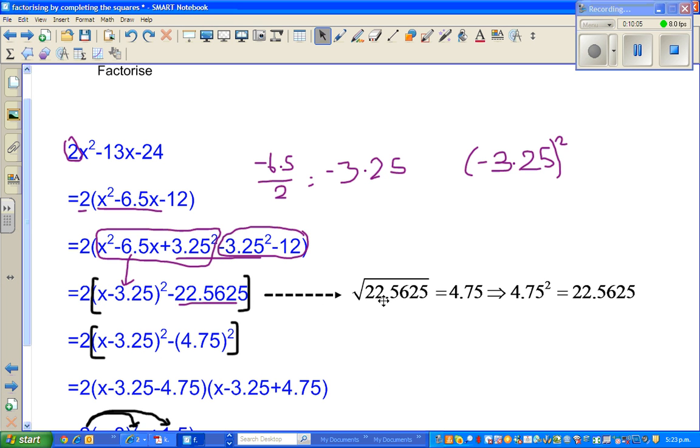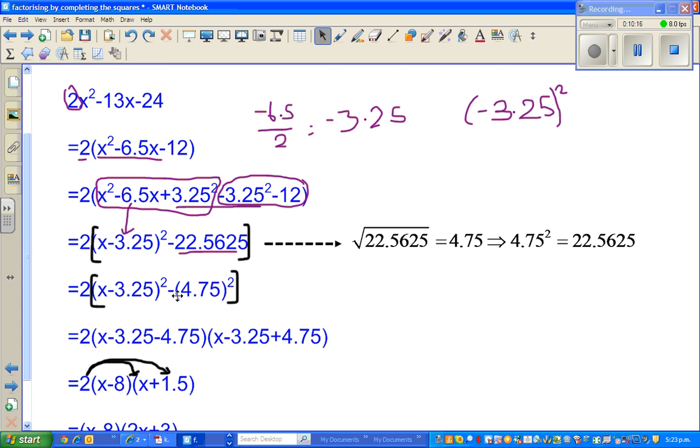Again, you can do this on a calculator. If you find the square root of this, that will be 4.75. Conversely, 4.75²=22.5625. So now you have got (x-3.25)²-(4.75)². The same process. Difference of 2 squares. This minus this and this plus this. So 2(x-3.25-4.75)(x-3.25+4.75). So this simplifies to -8, and this simplifies to 1.5.